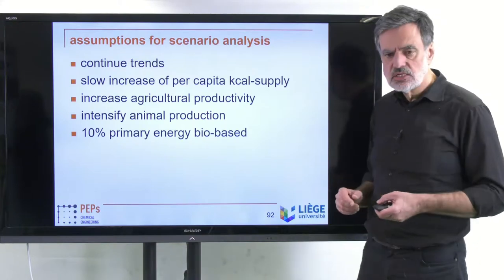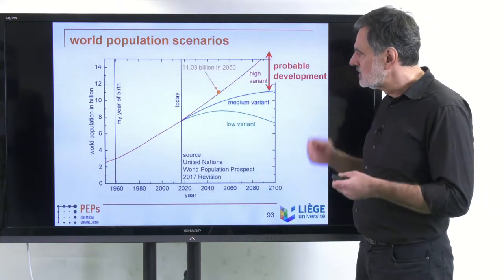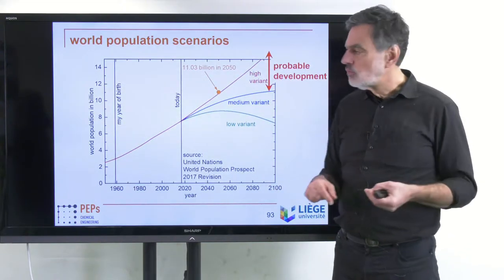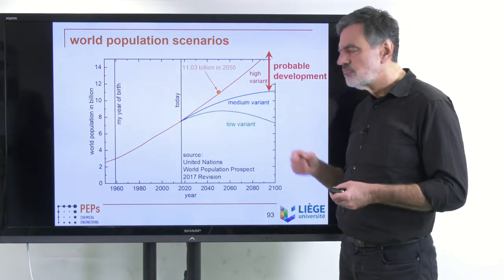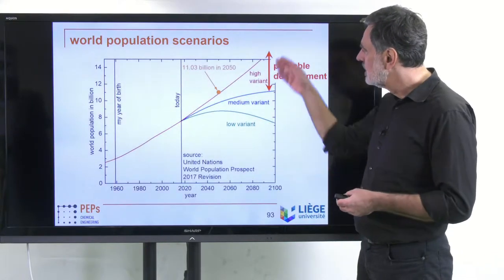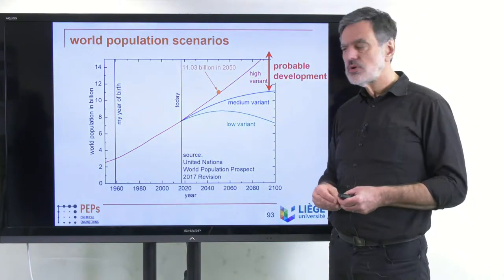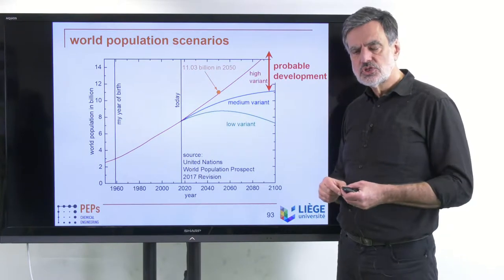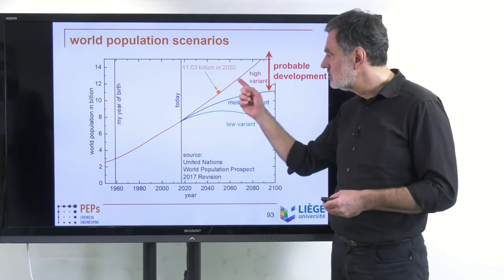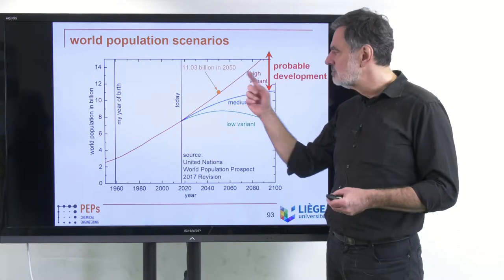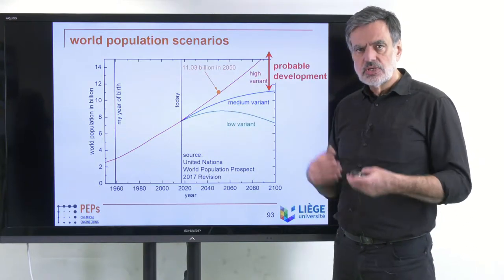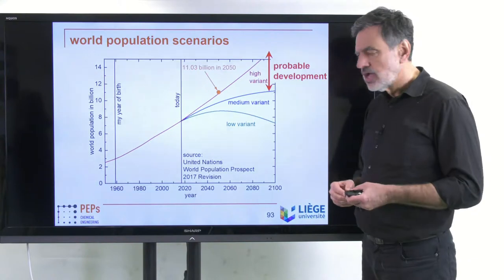World population is driving everything. As discussed in the corresponding video on world population, there is on one hand the high variant and on the other the medium variant, published by the United Nations Statistics Department. I work out in that video that the probable range includes this very high variant, which is quite likely to occur. Most literature refers only to the medium variant, but I argue why the high variant is actually quite likely.